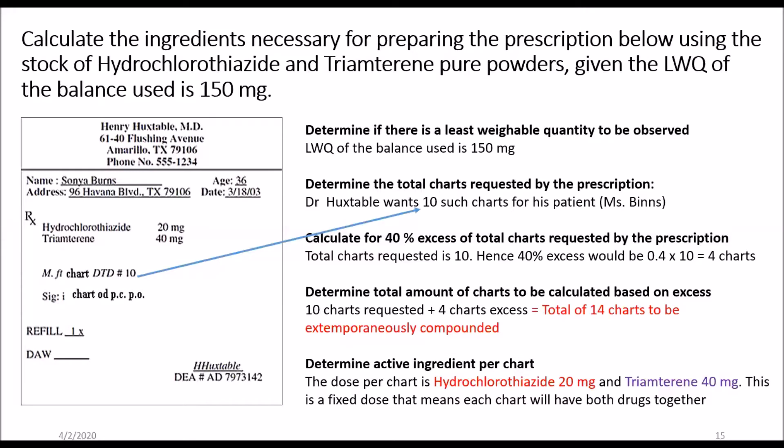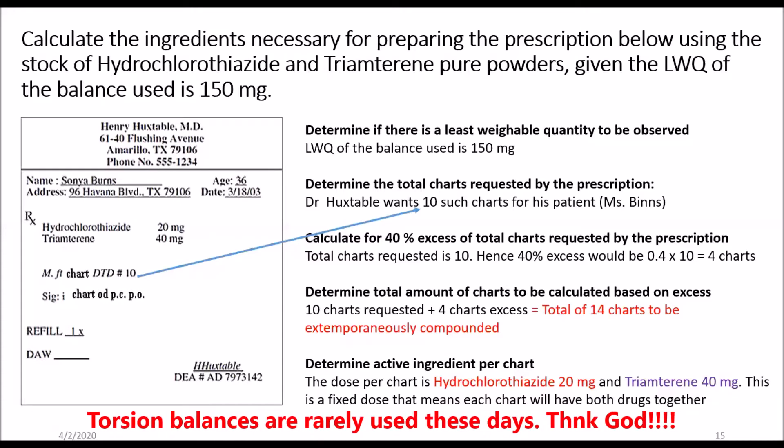If you're using a torsion balance — generally speaking, the class A torsion balances used in pharmacies back in the day — the least weighable quantity was 120 milligrams. So you couldn't weigh anything less than 120 milligrams.